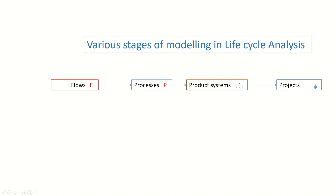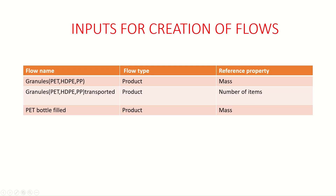When we consider the various stages associated with modeling in life cycle analysis, it starts with the elementary process called flows (F). Then we consider all the processes (P) associated with the production of the PET water bottle, followed by product systems and finally projects. For creating flows, we consider the flow name, the flow type, and the reference property.